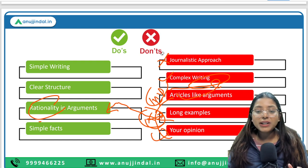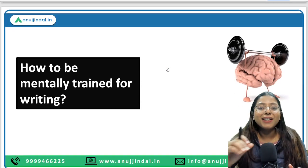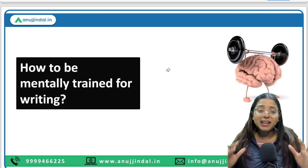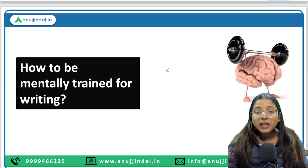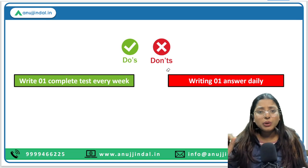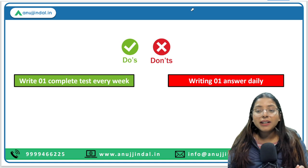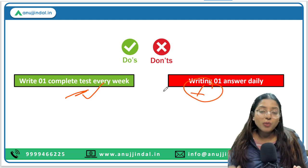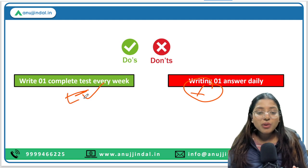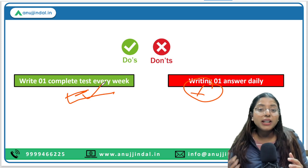This is yet another interesting dimension: how to be mentally trained for writing. One thing is to write one complete test every week, not one answer daily. If you write a complete test every week, you are giving training to your brain. You will get 90 minutes to write four answers in the FM examination. So putting yourself in that unfamiliar situation regularly is important.